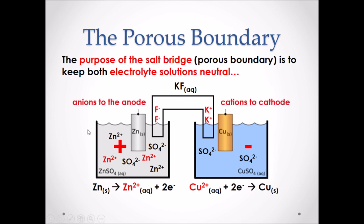A helpful rule: anions will always flow to the anode. Here, F⁻ anions flow to the anode, the site of oxidation. Conversely, cations will always flow to the cathode. Here, K⁺ cations flow to the cathode, which is the site of reduction.